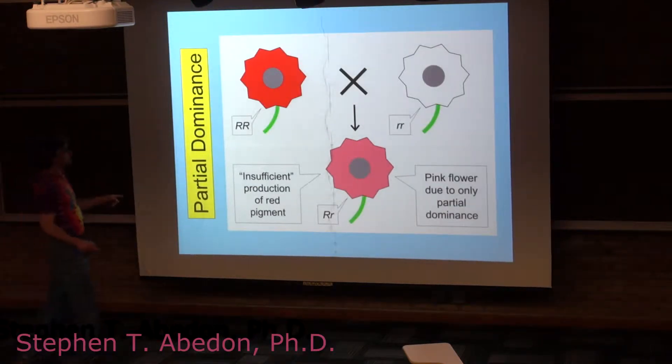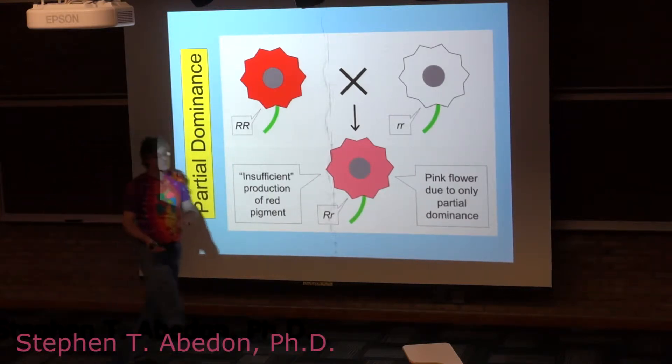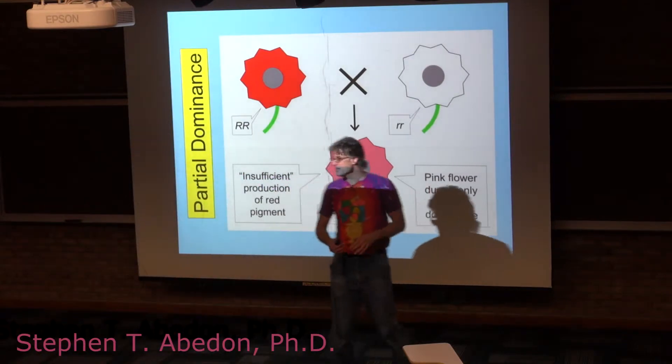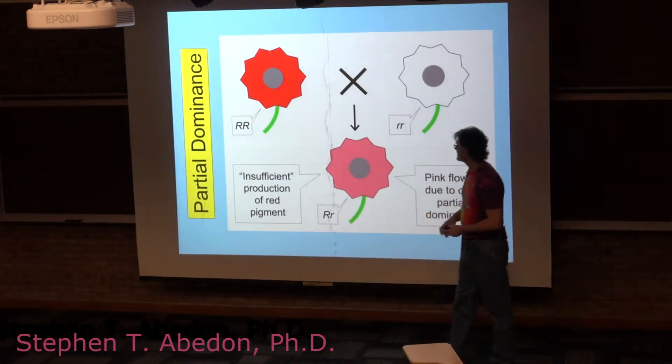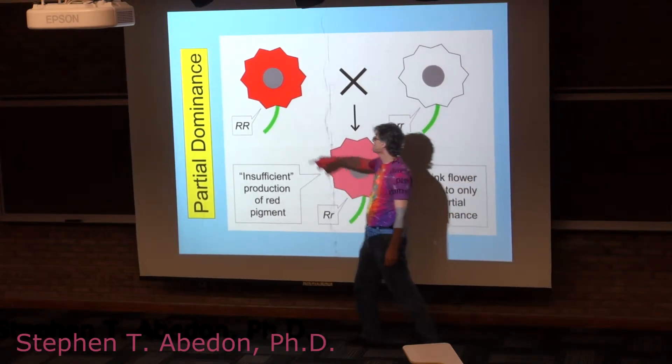So this is one of the complications. This is something called partial dominance, and in some ways it's actually not a complication because in this case, what you have is a situation where the heterozygote has a different phenotype, a distinguishable phenotype,